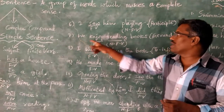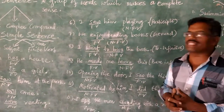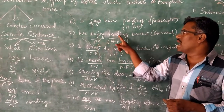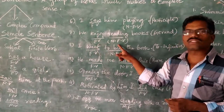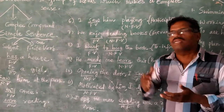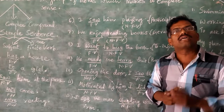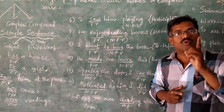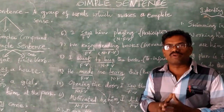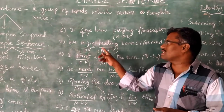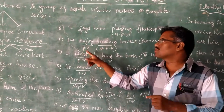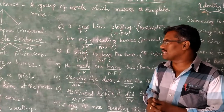Likewise, 'We enjoy reading books.' In this sentence also, we have only one finite verb and the other is a non-finite verb. Whatever number of verb forms are there in the sentence, if there is only one finite verb, the sentence is called a simple sentence. So this sentence carries only one finite verb and is also called a simple sentence.